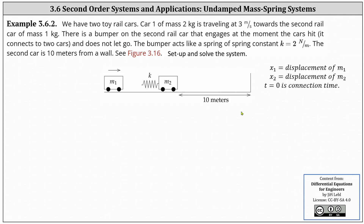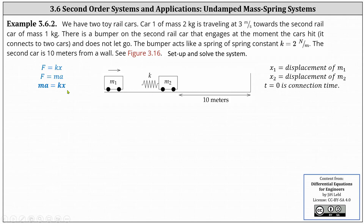To set up the system of differential equations that models the system, we use the equations force equals k times x, where k is a spring constant and x is the spring compression, and force equals m times a, where m is mass and a is acceleration. By performing substitution we can form the equation m times a equals k times x. However, k times x will be positive if the force is to the right and negative if the force is to the left. We have an equation for each of the two masses.